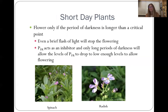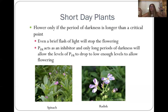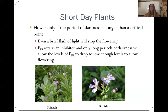We have two types of plants: short-day plants and long-day plants. Short-day plants flower only if the period of darkness is longer than a critical point — you have to have a long enough night to trigger flowering. Even a brief flash of light will stop flowering, so if you're growing plants in a greenhouse they'll keep them dark for the required amount of time to get a flower. In California, one of our main exports is flowers, so we grow them artificially — and in a greenhouse if someone accidentally turns on the lights during the dark period it will ruin the entire crop. PFR acts as an inhibitor, and only long periods of darkness allow PFR levels to drop low enough to allow flowering.